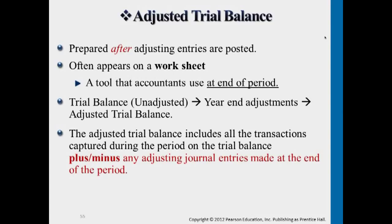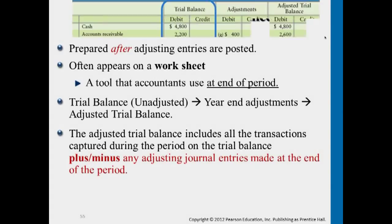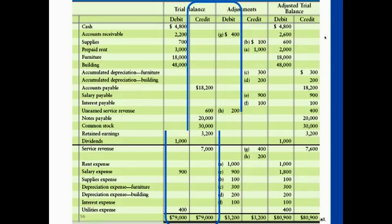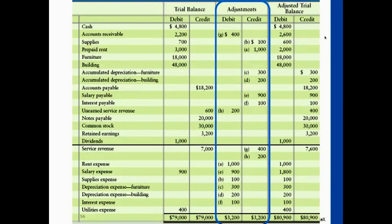If we take a look at what the adjusted trial balance will look like starting from the beginning: on the left side you have the original trial balance — the unadjusted one, shown in blue at the top. After we make the A, B, C, D, E, F adjusting entries, we post that information here. You have it in T-accounts and then you copy the balance here.